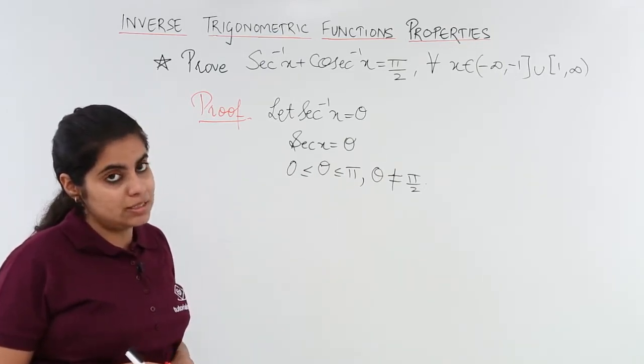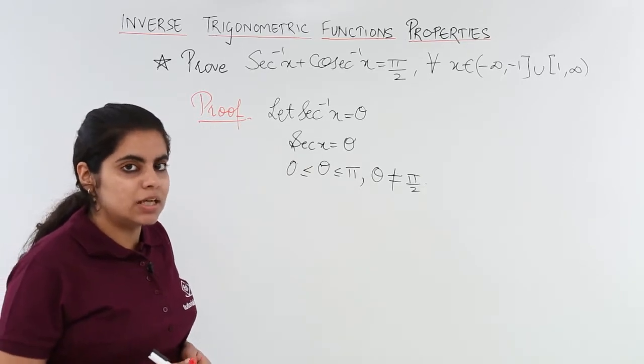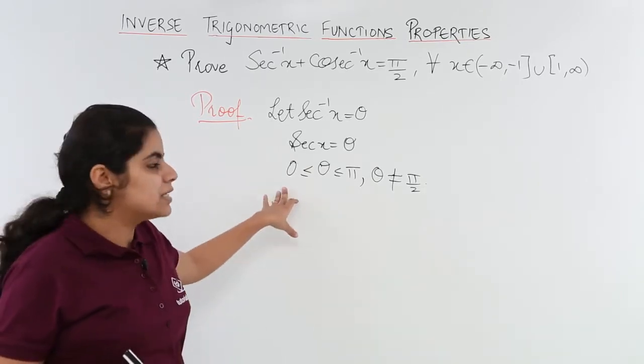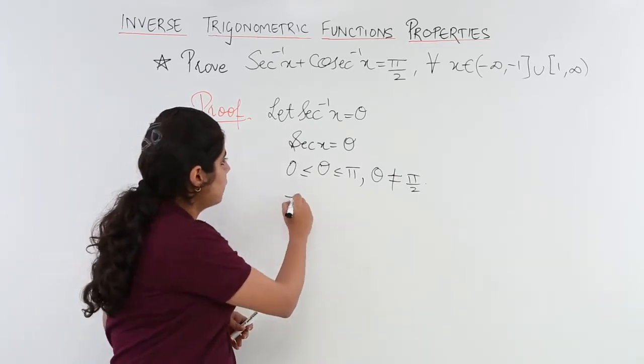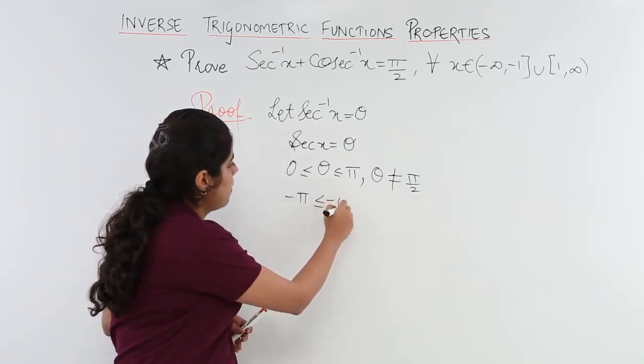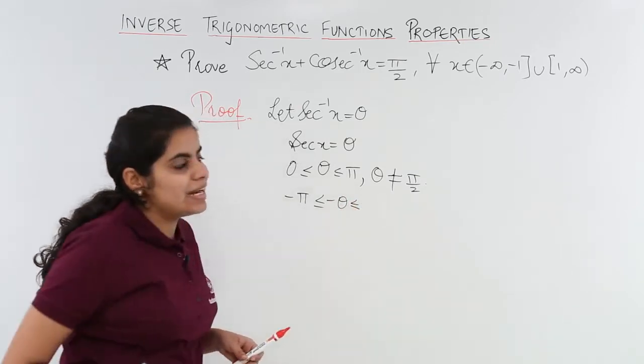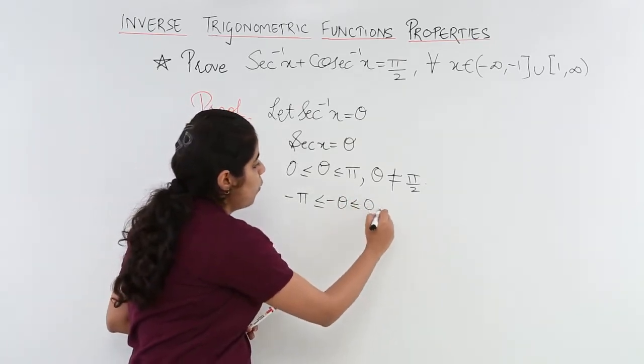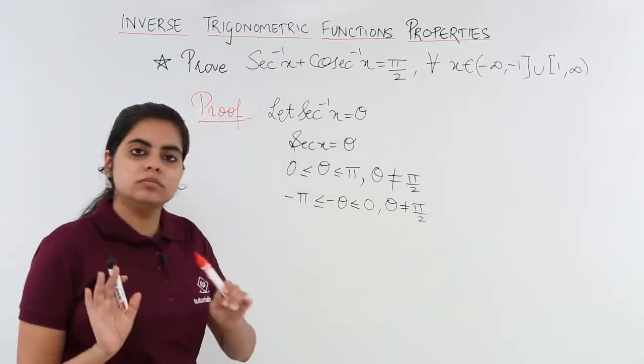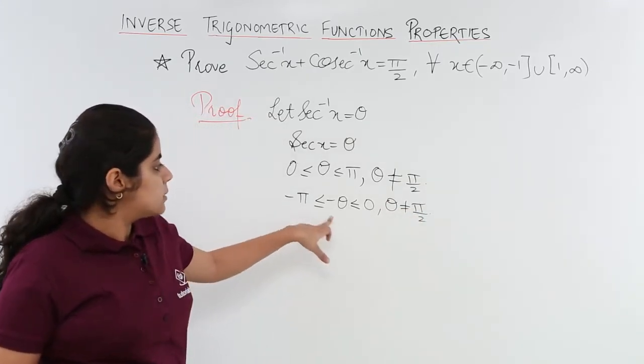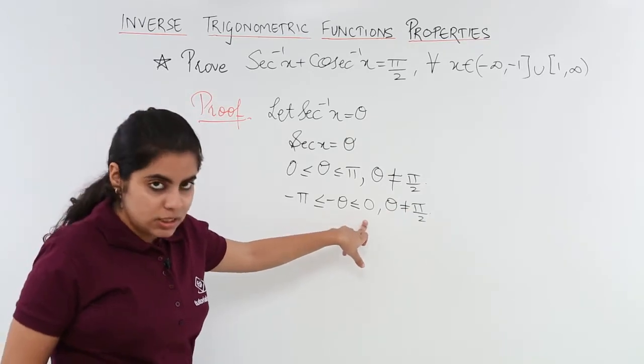What about -θ? If I have -θ things would change. -0 is 0 only but -π it is different. So I have -π < -θ < 0 wherein θ is again not equal to π/2.